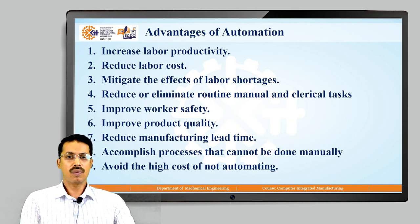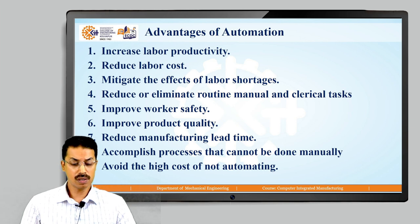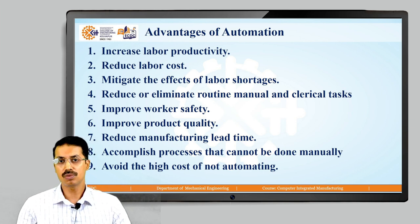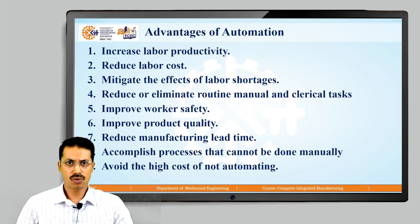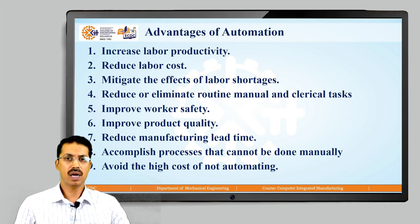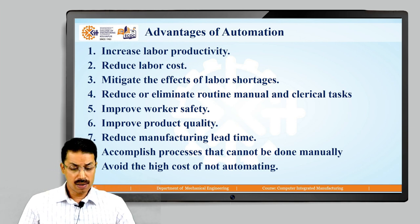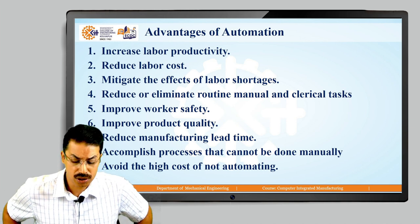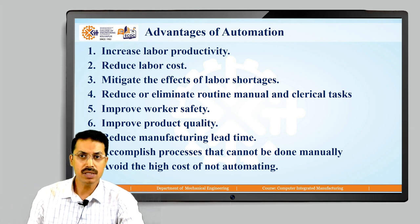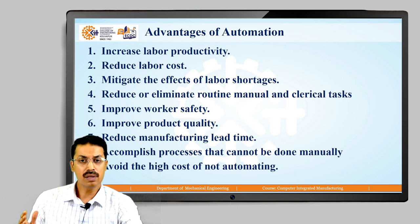Now, what are the advantages of automation — why do we go for automation and what is its need? The first point is increased labor productivity. This is the main advantage. Automating manufacturing operations increases production rate and labor productivity, meaning greater output per hour of labor input, while the labor input remains fixed.